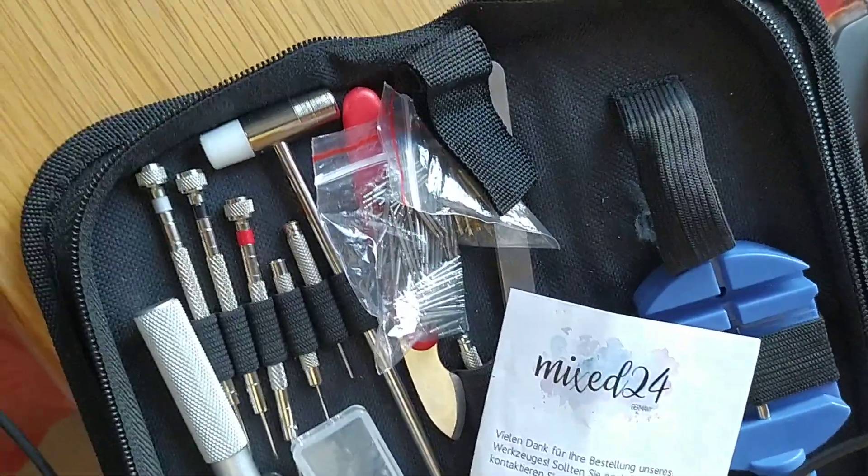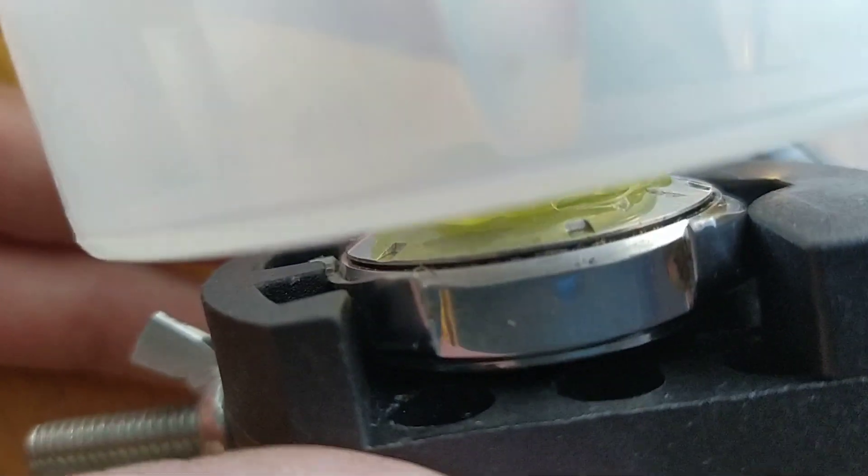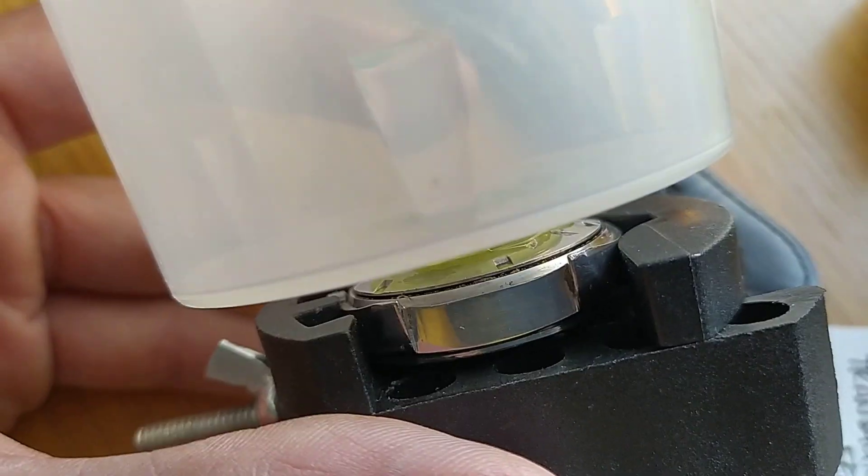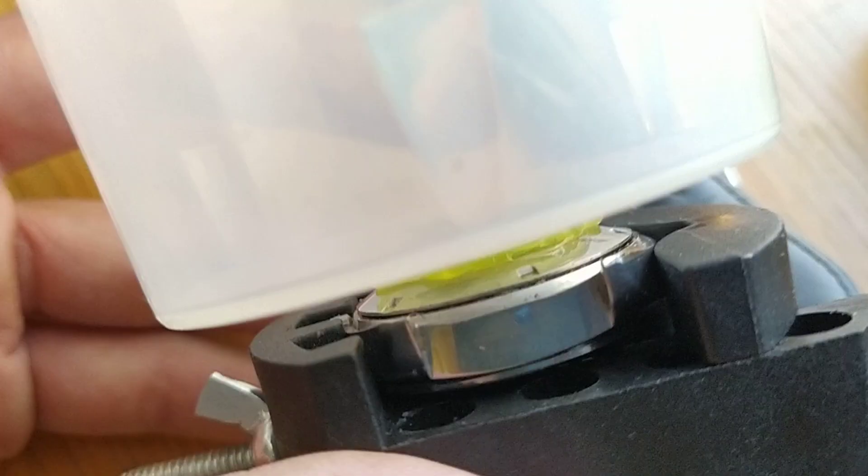So I used this tool from the watch repair or watch open kit. And as you can see, the things where the watch opener goes in, they were really tiny. I couldn't grab hold of them and I couldn't turn it.